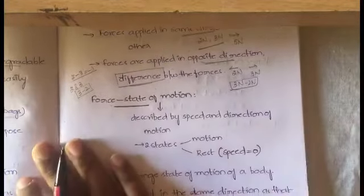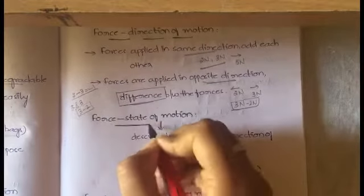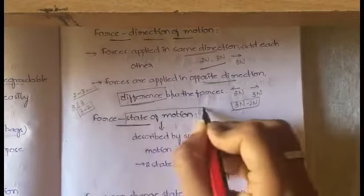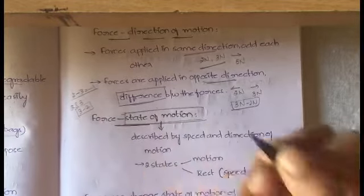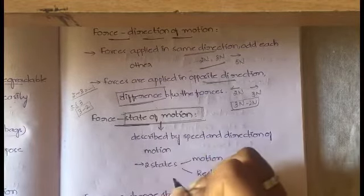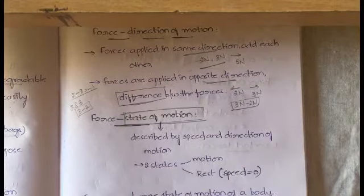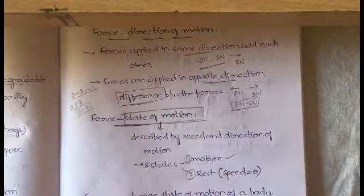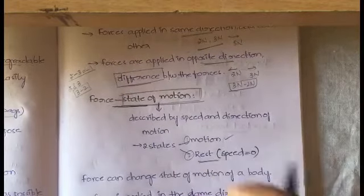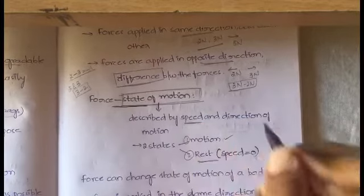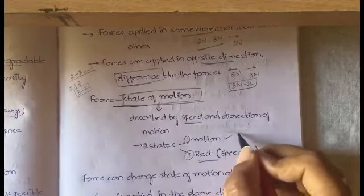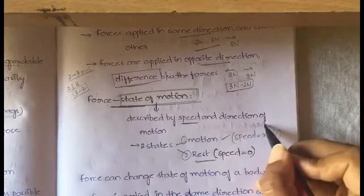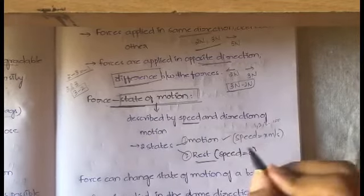The second concept is force and state of motion — how force changes the state of motion of an object. The state of motion is described by the speed and direction of motion. There are two states: motion and rest. Rest means speed is zero; motion means speed has some value — it can be one, two, three, or any number.